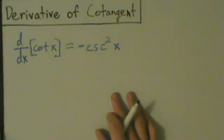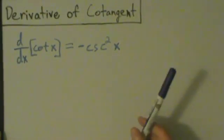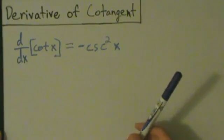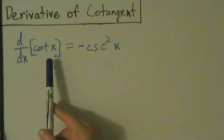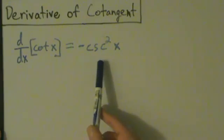Okay, so in this video we're going to do the derivative of cotangent, so that's the last trig function before we move on to inverse trig, I guess. So here, d/dx of cotangent of x equals negative cosecant squared of x.